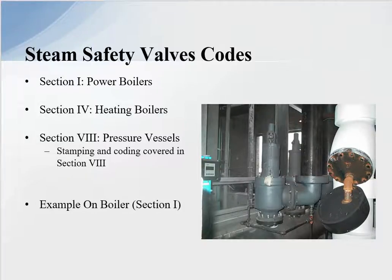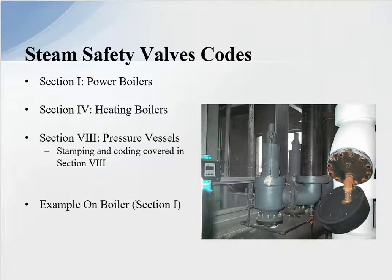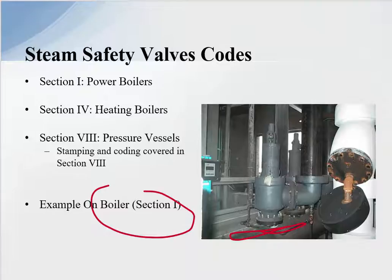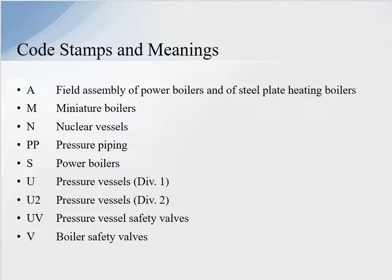In a steam system, we look at Section 1 for boilers or power boilers, Section 4 for heating boilers, and Section 8 for pressure vessels away from the boiler in the steam system. Anything away from the boiler we are typically looking at Section 8 safety valves. An example shows a safety valve located on a boiler, which would be Section 1. The code stamps are: A, M, N, PP, S, U, U2, UV, and V. For example, PP is pressure piping, S is for power boilers, U is for pressure vessels, and V is for boiler safety valves.